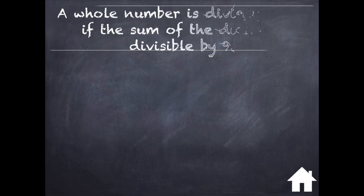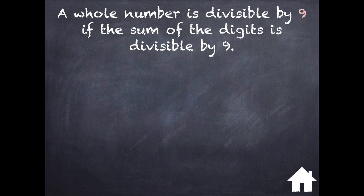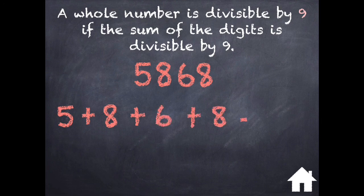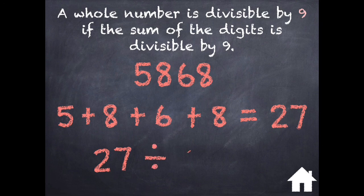A whole number is divisible by 9 if the sum of the digits is divisible by 9. Let's look at the number 5868. If we add up those digits — 5 plus 8 plus 6 plus 8 — we get 27. 27 is divisible by 9 because 27 divided by 9 is 3. So I know 5868 is also divisible by 9.